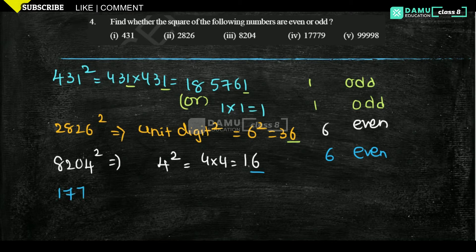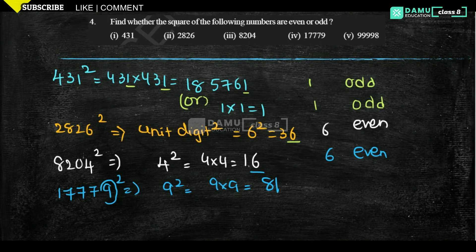Next one: 17779 squared. Let's take the unit digit: 9 squared is 9 into 9, which is 81. The unit digit here is 1, and 1 is odd.